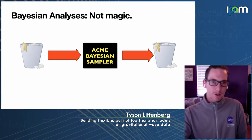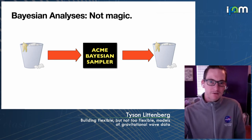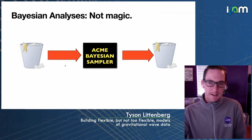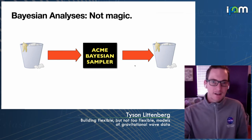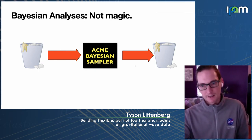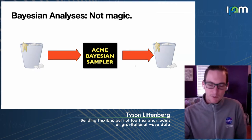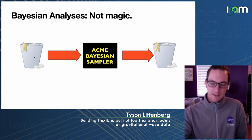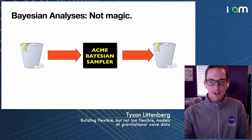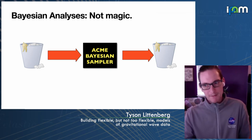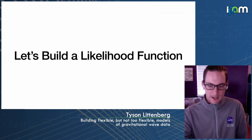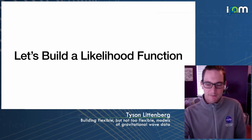An important caveat: this is not magic. It is a nice mechanical way of doing big integrals, but if you shove a garbage model into your Bayesian sampler, what you get out is garbage posteriors and garbage evidences. What we're going to talk about is how to make sure you're feeding a good, healthy model into your sampler so that when you interpret your results you're not accidentally fooling yourself.